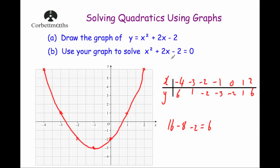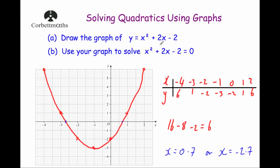For part b, solving x squared plus 2x minus 2 equals 0, we need to find where the graph crosses the x-axis. It crosses here and here, giving solutions x equals approximately 0.7 and x equals approximately minus 2.7. If you substitute 0.7 back in you'll get an answer close to 0 — it won't be perfect since reading a graph is less accurate than the quadratic formula or completing the square, but it can be asked in the exam.